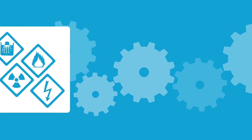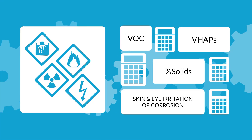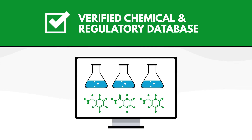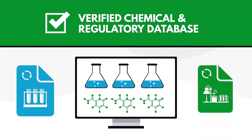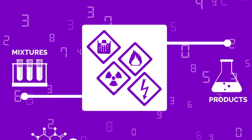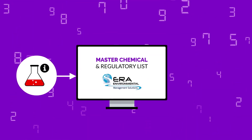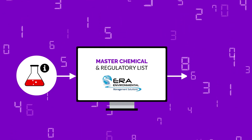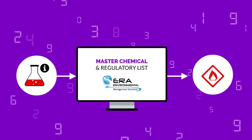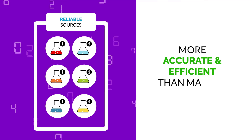Save time by automating chemical hazard classifications and calculations with the click of a button. ERA has a verified chemical and regulatory database that is maintained consistently to incorporate all existing and new chemicals on the market. Hazard classifications are assigned to mixtures or products based on the inputted chemical data. Accurate chemical information is directly pulled from ERA's master chemical and regulatory list, which then automatically assigns the correct classifications and displays accurate pictograms.